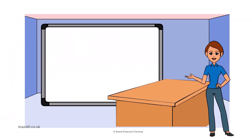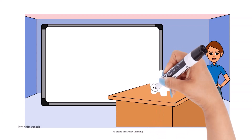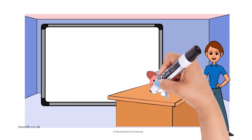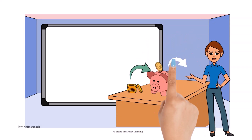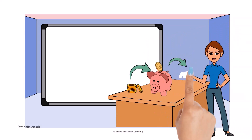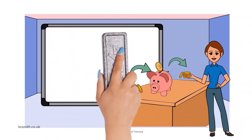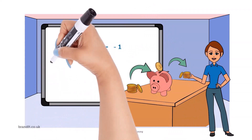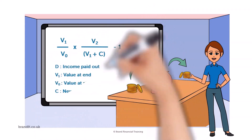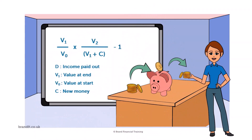The time-weighted rate of return, or TWR, measures the return on capital invested. Each time money comes into or out of the portfolio, a separate calculation is performed. This means that deposits and withdrawals do not influence the final return figure. The return for each period is calculated by dividing the end value by the value at the beginning.